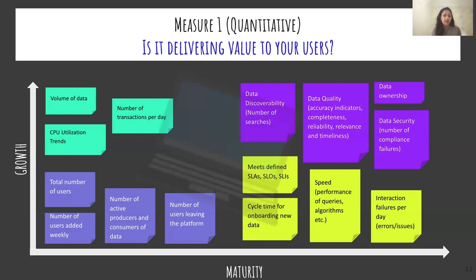In maturity, investments are lower and you are working towards improving or maturing different features, optimizing costs, and resource optimizations. In this stage we focus on things like SLAs, performance stats, cycle time for onboarding new users, interaction failures, and similar metrics. When the platform has grown and matured enough, you can start looking at data attributes like governance, data discoverability, and quality — including accuracy indicators and completeness of data.